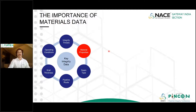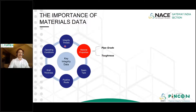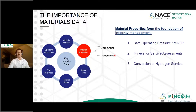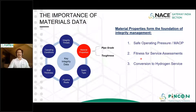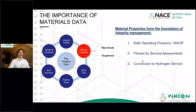This first slide is really about the importance of materials data. The two properties I want to focus on are pipe grade and toughness, and these sit on the same level as key integrity management components such as integrity threats, operating conditions, wall thickness, pipeline route, and seam type. They form the foundation of integrity management — MAOP is defined by diameter, wall thickness, and pipe grade. Fitness for service assessments of metal loss and crack-like features depend on pipe grade and fracture toughness. Looking to the future, hydrogen service conversion means different pipe grades may have different susceptibility to hydrogen-assisted cracking or embrittlement.